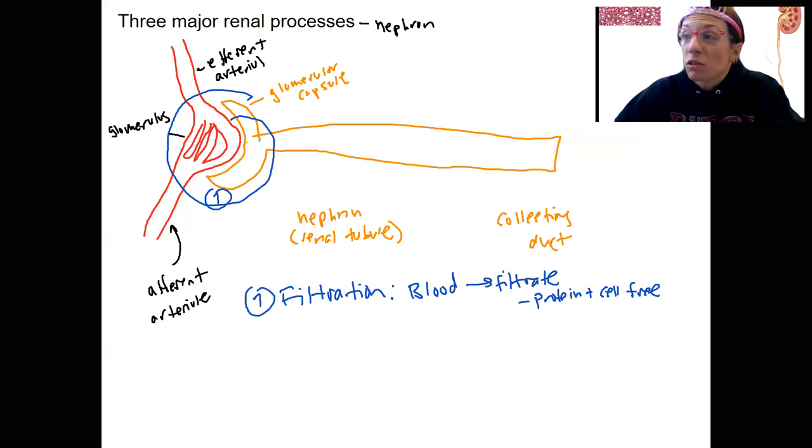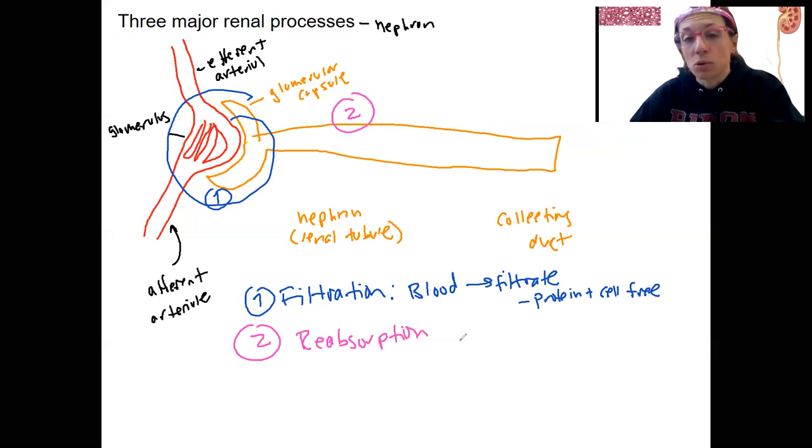Then in the rest of that renal tubule, we've got two processes. One is, let's call that two. It's step two. One of the two processes that occurs in the tubule is going to be reabsorption, tubular reabsorption. So this, as I said before, is taking stuff that was dumped into this tube and taking it back into the blood.